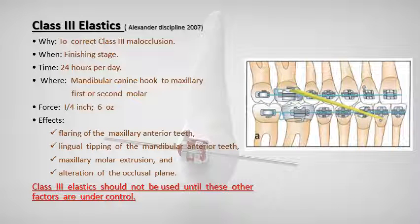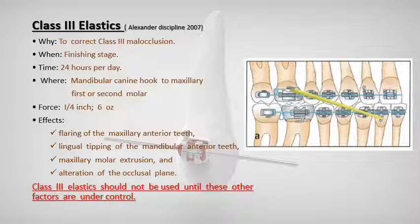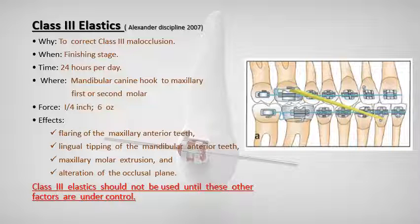Class 3 elastics are used to correct Class 3 malocclusion, used in the finishing stage for 24 hours per day. They extend from the mandibular canine hook to the maxillary first or second molar, with a force of 1/4-inch, 6 ounces. The effects include flaring of the maxillary anterior teeth, lingual tipping of the mandibular anterior teeth, maxillary molar extrusion, and alteration of the occlusal plane. Class 3 elastics should not be used until these other factors are under control.